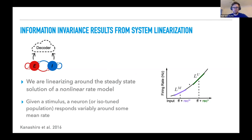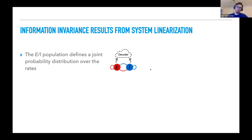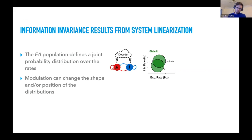It's important to note that we're linearizing around the steady state solution of a nonlinear rate model. In particular, given a stimulus, a neuron, or if you want to think about it as a mean field isotune population, is responding variably about some mean rate. The only way to perturb away from that is to introduce a modulus. So noise is not so big that we're perturbing off of our operating point. Now the EI population is defining a joint probability distribution over the rates. One can visualize that here with the 95% confidence intervals over the rates responding to a stimulus S and a perturbation of the stimulus delta S.